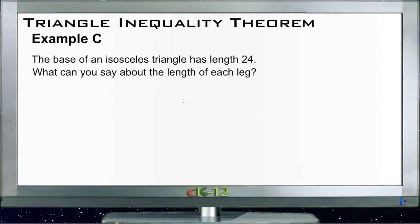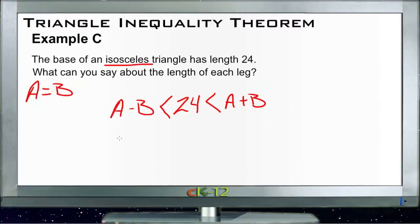So, this one says that our third side is 24, and 24 needs to be greater than A minus B, but less than A plus B. Now, the interesting thing is that this is an isosceles triangle. So, for this particular triangle, A and B are the same thing. So, we really could just say A minus A, right? So, if we have A minus A is less than 24, which is less than A plus A,